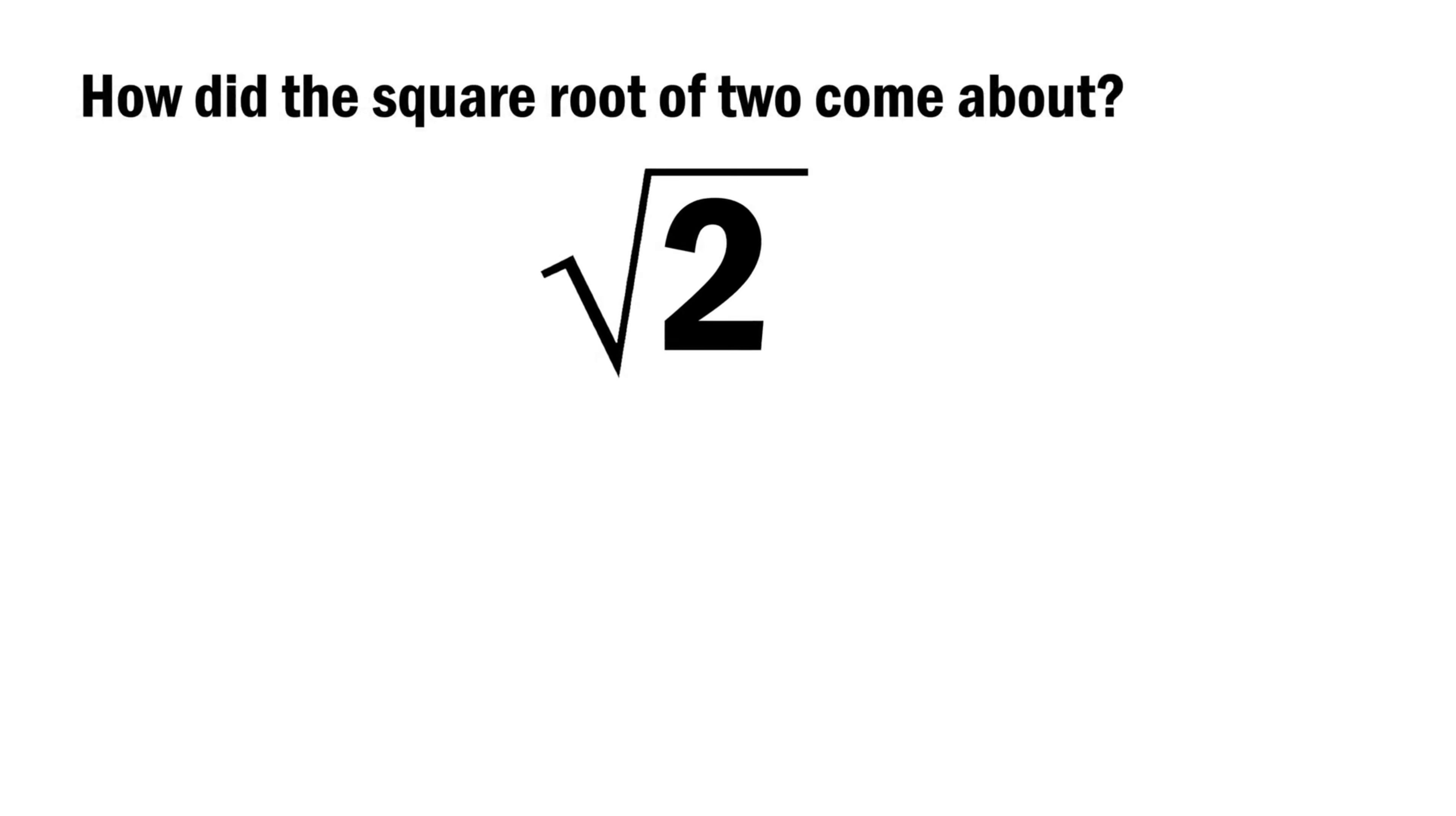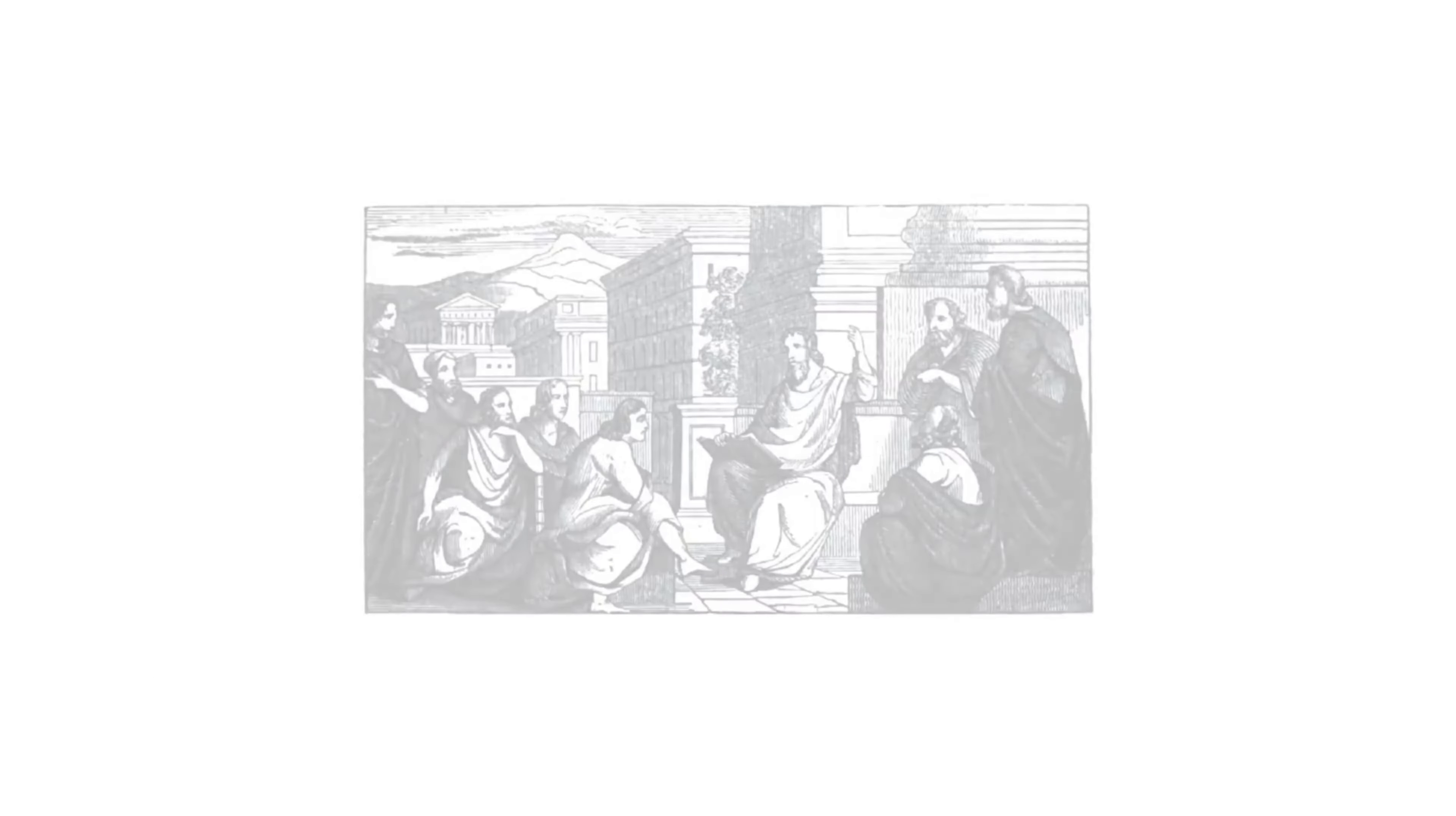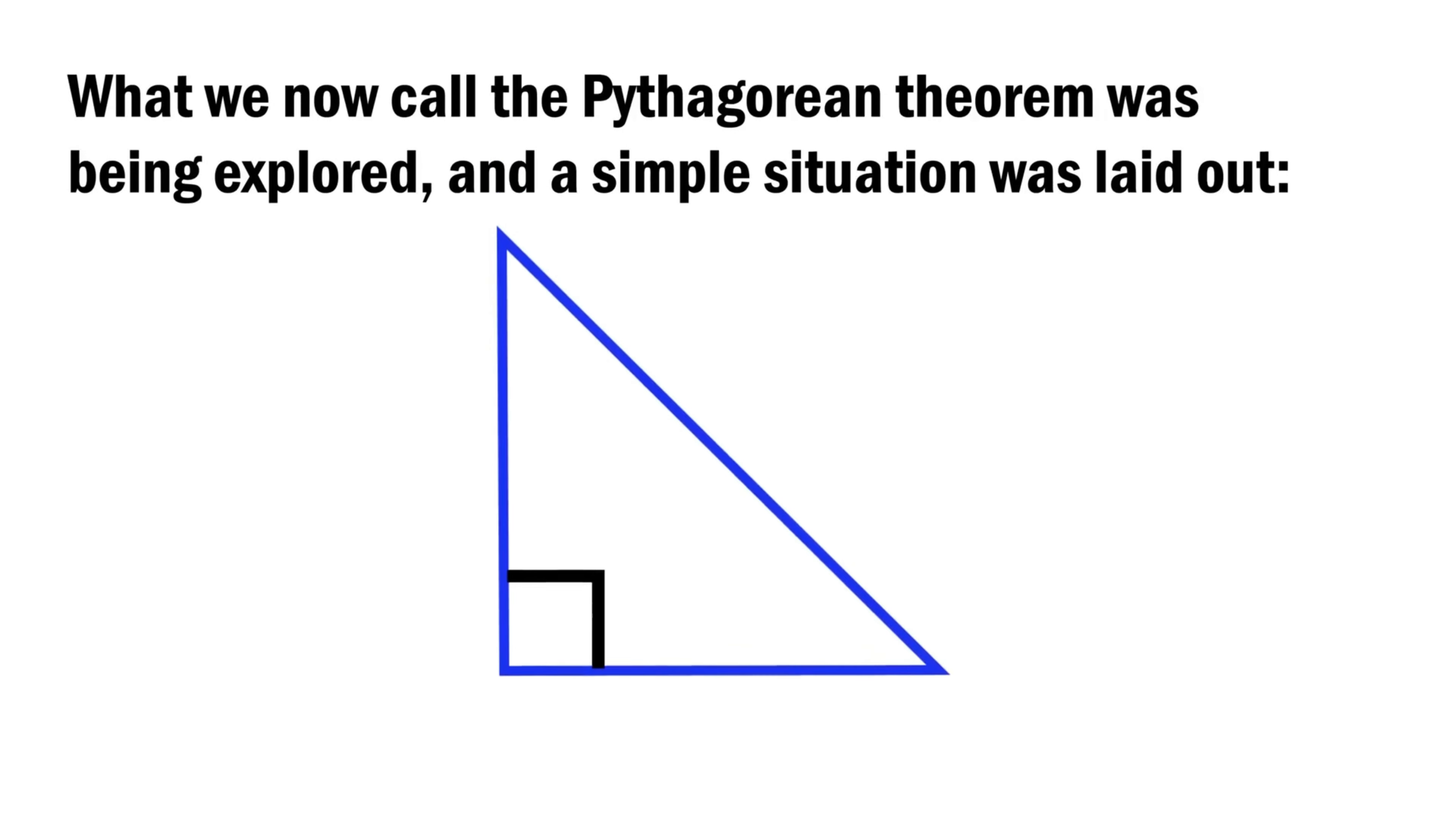So how did the square root of two come about? Well, we must journey to the time of Pythagoras and his followers. Flat geometry was beginning to sprout in Western minds. And of particular importance was the right triangle, a triangle with orthogonal edges meeting at a right angle. What we now call the Pythagorean theorem was being explored and a simple situation was laid out.